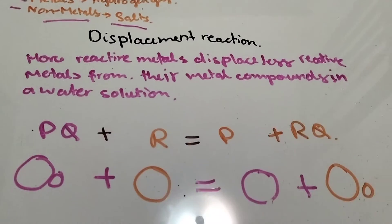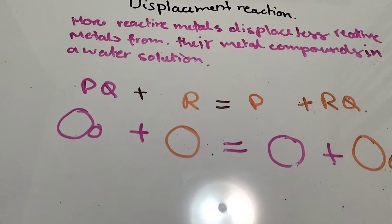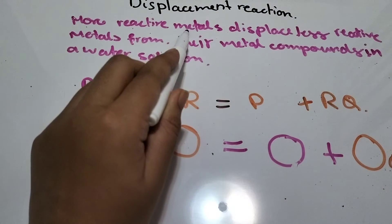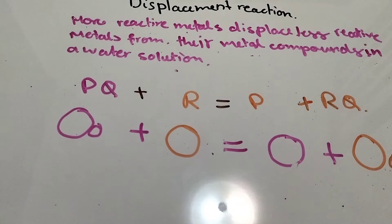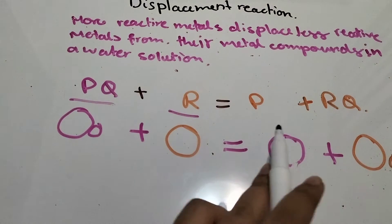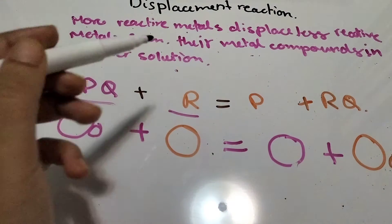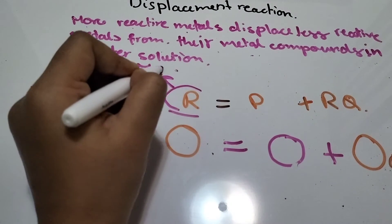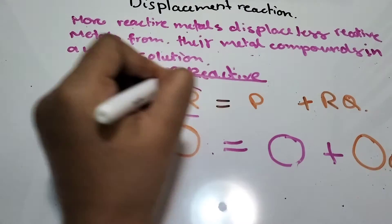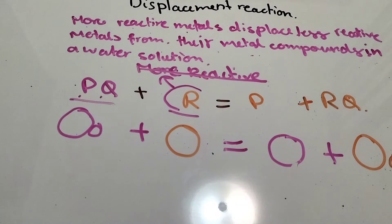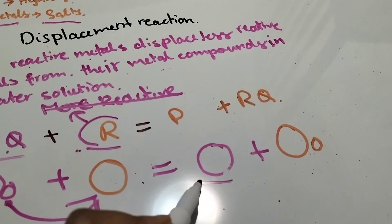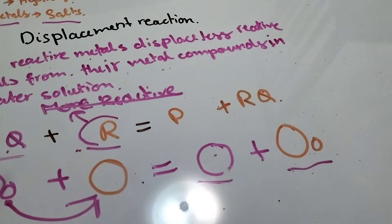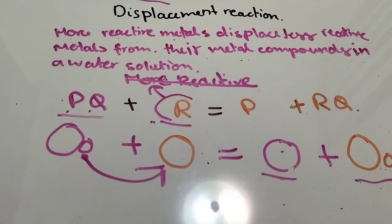Now, what is the displacement reaction? More reactive metals displace less reactive metals from their compounds in a water solution. For example: if you have PQ + R, they form P + RQ. R is the more reactive element — it takes Q away from P, because the more reactive one displaces the less reactive one.